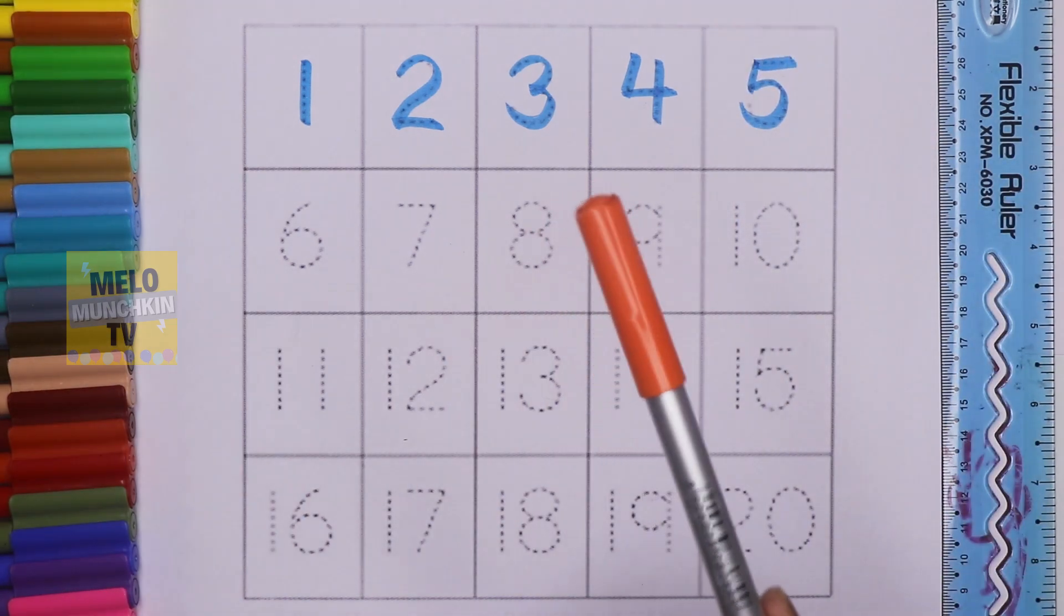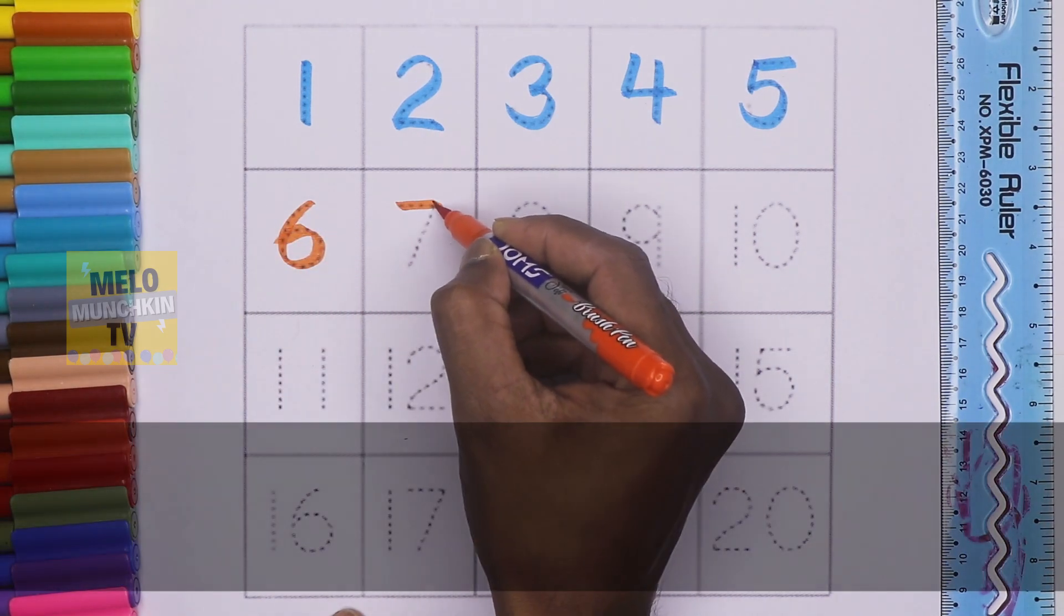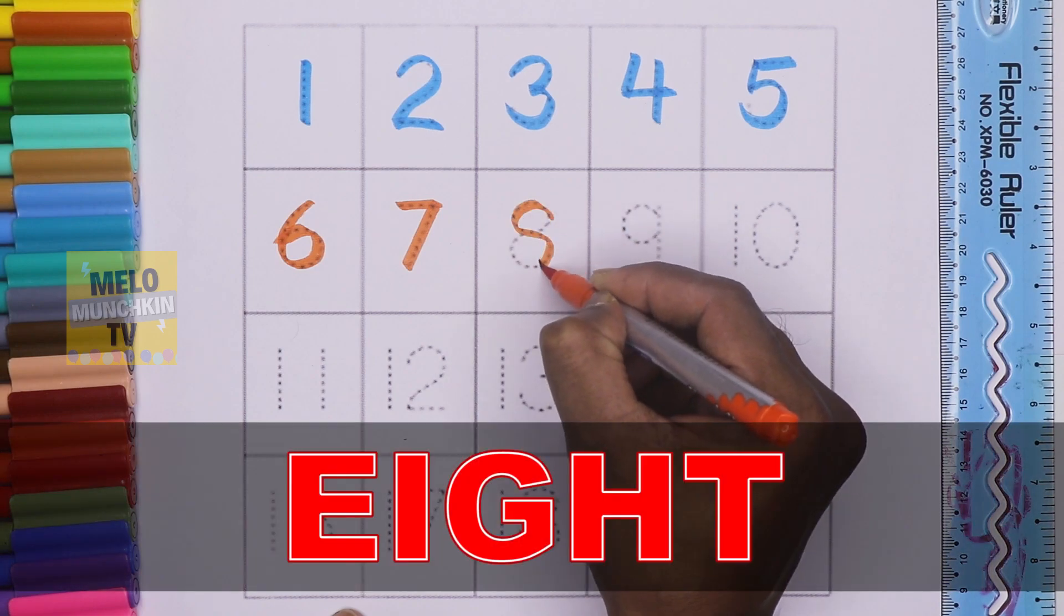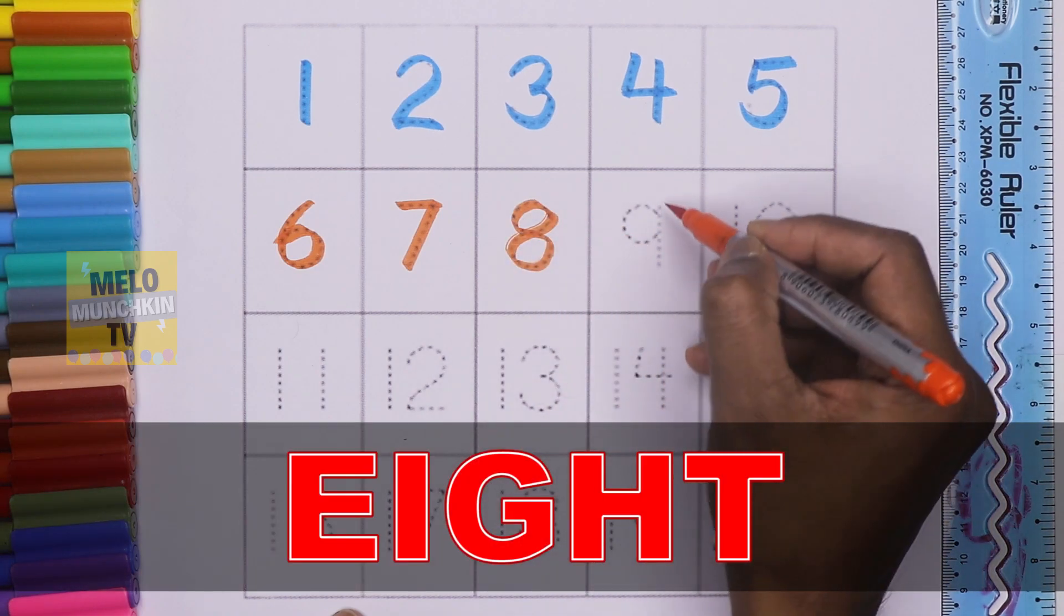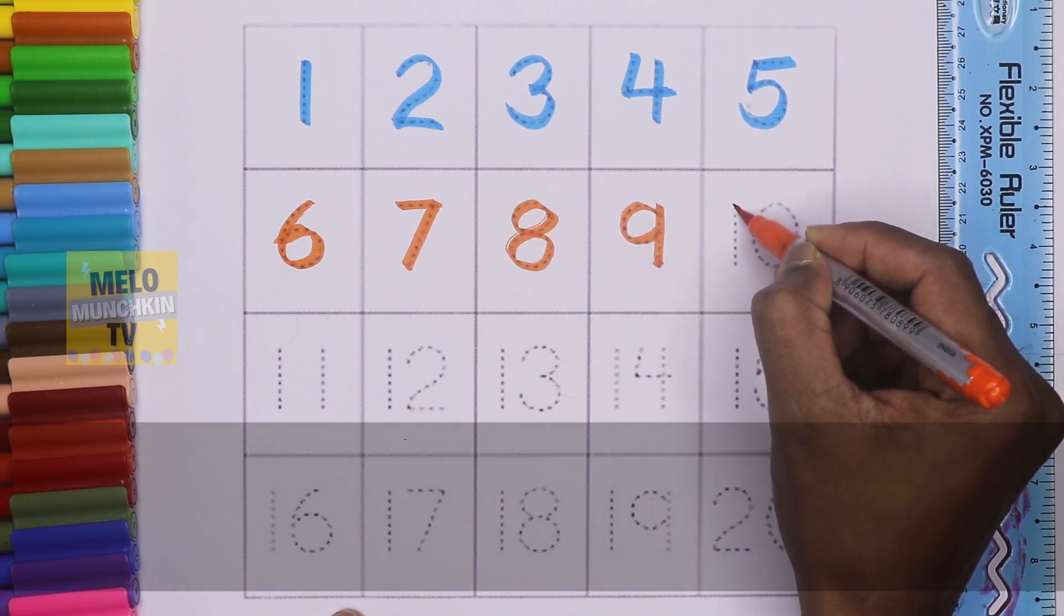Orange color. This is number 6, S-I-X, 6. This is number 7, S-E-V-E-N, 7. This is number 8, E-I-G-H-T, 8. This is number 9, N-I-N-E, 9. This is number 10, T-E-N, 10.